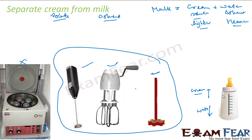That is a very simple process. We are using the property that cream is lighter and water is heavier to separate them. This process is very useful to diagnose blood and urine in labs. It is also used in dairies and homes to separate butter from cream, and it is used to squeeze out water from clothes in washing machines — the water, being heavier, comes down and is drained.